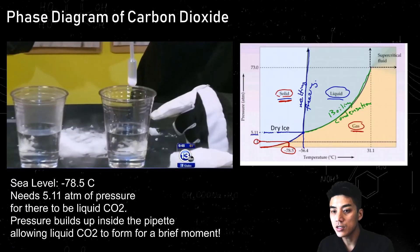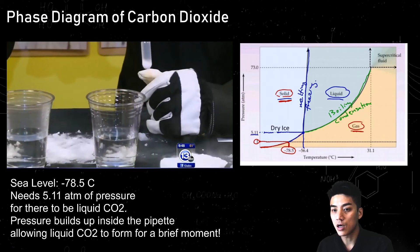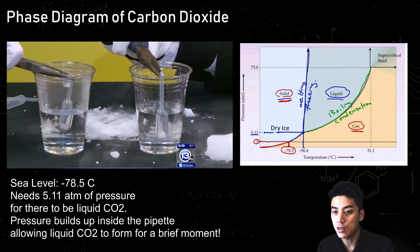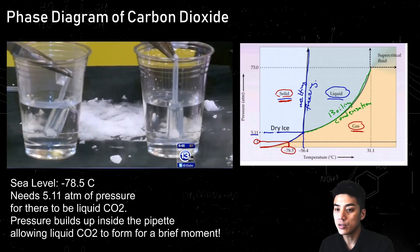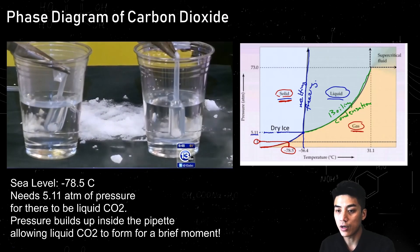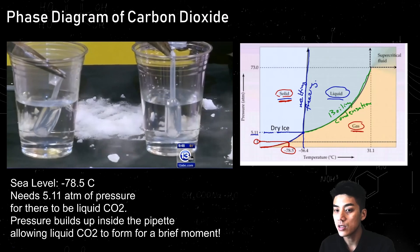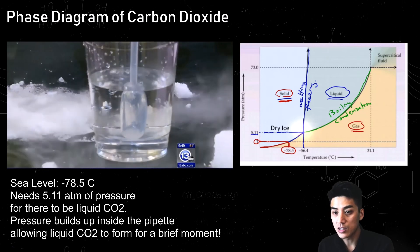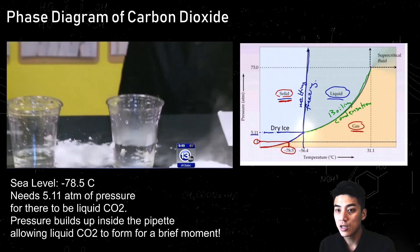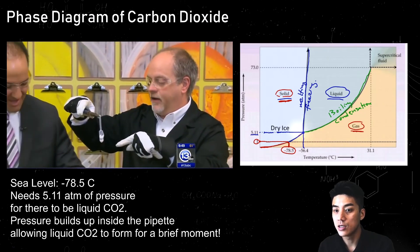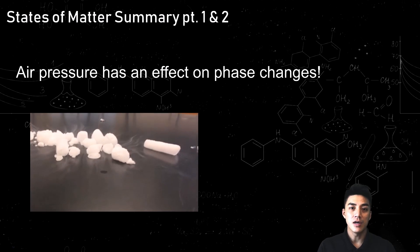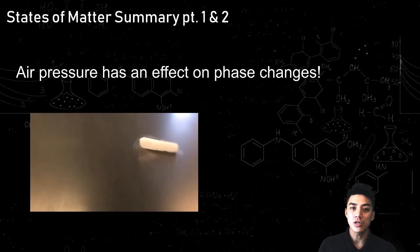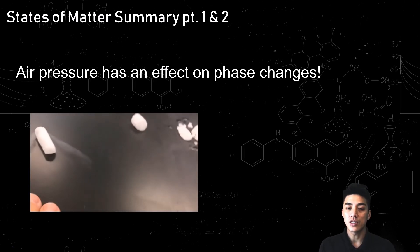We're going to see liquid CO2 get created in this demonstration. There is carbon dioxide or dry ice in a pipette, being clamped with a pair of pliers so the pressure builds up. As the pressure mounts — remember the minimum pressure required for liquid CO2 is 5.11 atmospheres — you can see it starting to bulge, and the dry ice becomes translucent as it becomes a liquid. You can see the liquid CO2 appear just for a brief moment before the pipette bursts from the pressure. Air pressure has a great effect on the states of matter and phase changes.